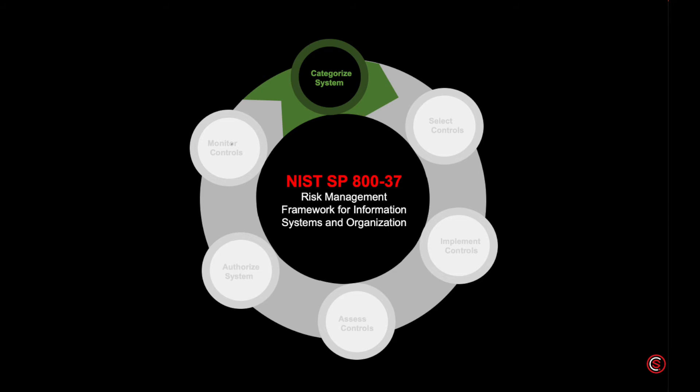Step one is security categorization. Systems are categorized based on the adverse impact to organizational operations and assets with respect to the loss of confidentiality, integrity, and availability of systems and the information processed, stored, and transmitted. This influences the selection and prioritization of security controls. Systems supporting the most critical or sensitive operations will demand the greatest level of attention and effort. This step should be integrated into the initiation, concept, or requirements analysis phase of the SDLC.